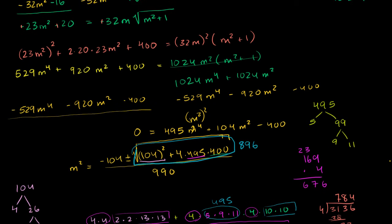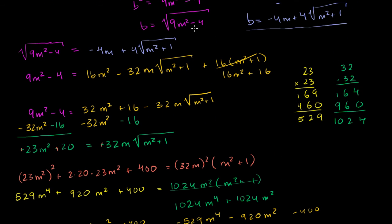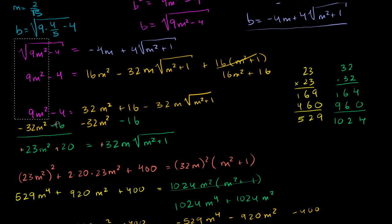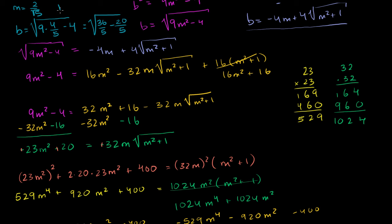Now we just have to go back to one of our equations — whichever one is simpler — and find the y-intercept. m is equal to 2 over the square root of 5. b is going to be equal to the square root of 9 times m squared minus 4. m squared is 4 fifths, so this is 9 times 4 over 5 minus 4, which is 36 over 5 minus 20 over 5, giving us the square root of 16 over 5. That is 4 over the square root of 5.